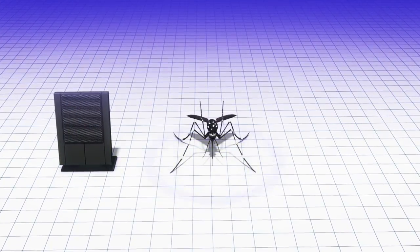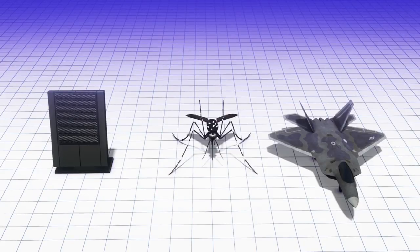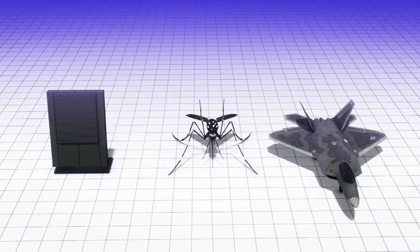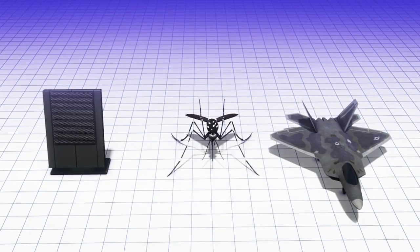Another researcher, unassociated with the project, explained it may be more difficult to detect a mosquito than an F-22. This is because of the differences in structure and movements. Background noise may also make it difficult to track mosquitoes via radar.